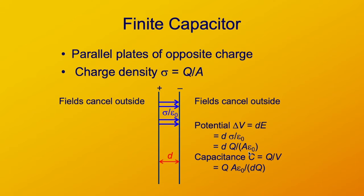Recall, when you're dividing by a fraction, you multiply by its reciprocal. So this capacitance is Q times A times epsilon naught, divided by dQ. We can simplify that by factoring out the Q in the numerator and the denominator, and we end up with epsilon naught times A over d. So the capacitance of a capacitor is directly proportional to the area of the plates and inversely proportional to the distance between the plates.